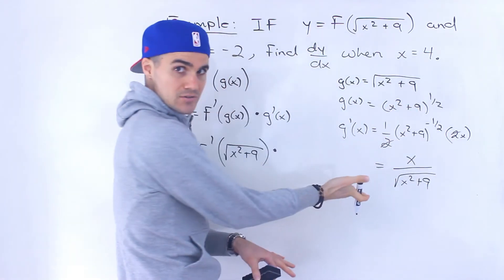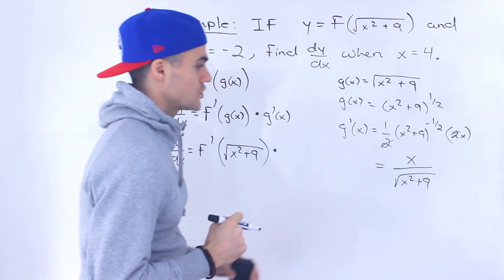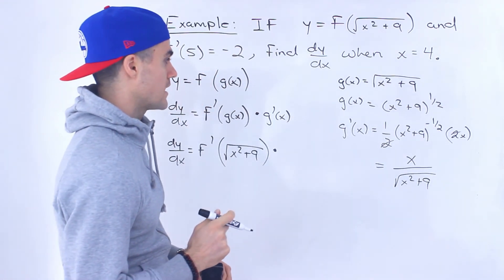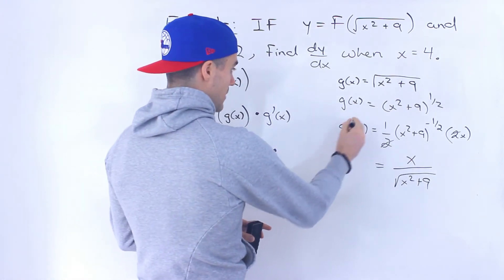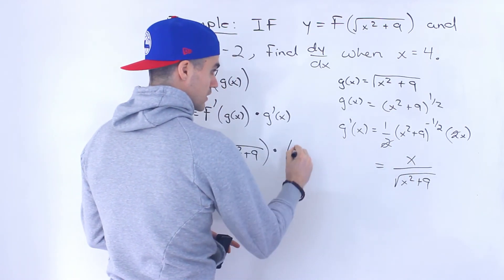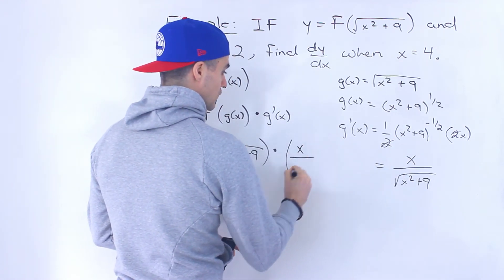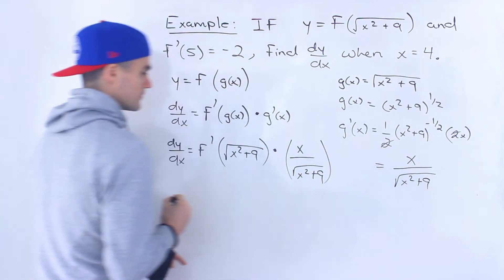And so what we end up having is x over the square root of x squared plus 9. If we take that, bring it down to the denominator to make that exponent positive, and then change the exponent to be a square root. Right, so g prime of x, the derivative of g of x is this over here. So we're gonna have x over the square root of x squared plus 9, like that.